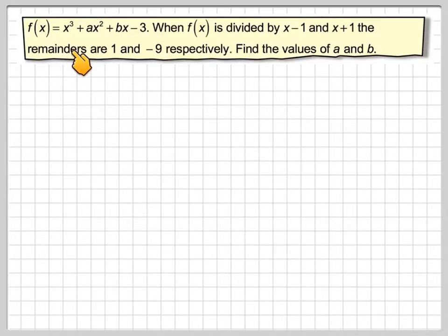If f of x equals x cubed plus ax squared plus bx minus 3, when f of x is divided by x minus 1 and x plus 1, the remainders are 1 and minus 9 respectively. Find the values of a and b.